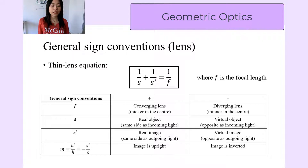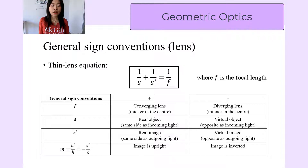Focal length is positive when we have a converging lens — that is when the lens is thicker in the center. And the focal length is negative when we have a diverging lens; a diverging lens is when the center is thinner.